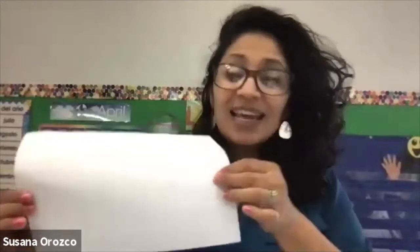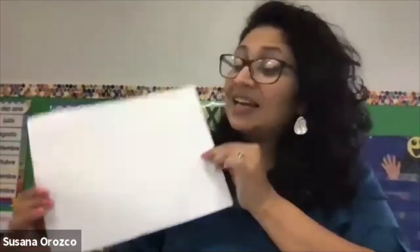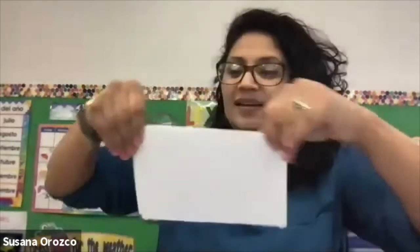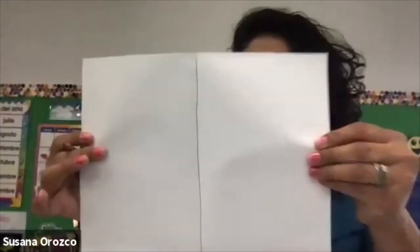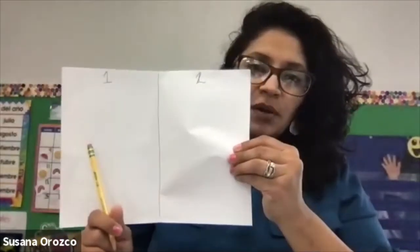If you're at home, grab a piece of paper — any paper will do. If you're in class, you already have it. You're going to fold this paper so you have two sides. I'm going to draw a line down the middle so I know how much space I have on each side, and I'll put the number one and number two at the top. Friends at school, your teacher will give that to you.